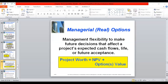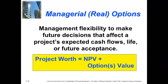The next topic is managerial options. A managerial option is management's flexibility to make future decisions that affect a project's expected cash flow, life, or acceptance. Managerial acceptance or rejection depends on the option value. A project can be expanded, contracted, rejected, or abandoned. There could be multiple options, but essentially the project worth equals NPV plus option value. This option value helps us determine whether to accept or reject the project.